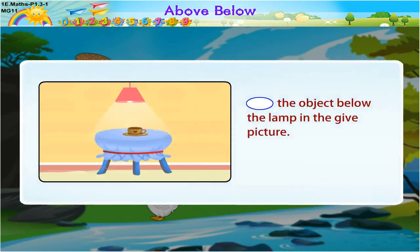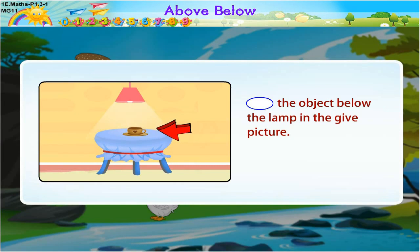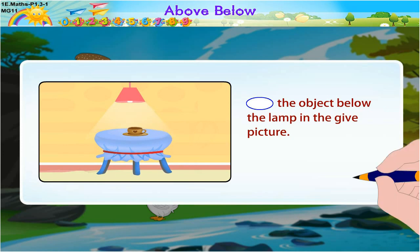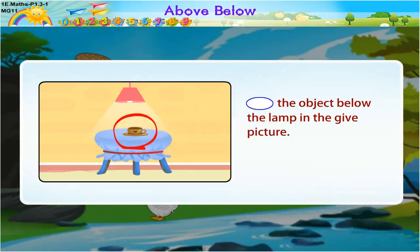Circle the object below the lamp in the given picture. We can see that a cup is exactly below the lamp. Hence, circle the cup. Very good.